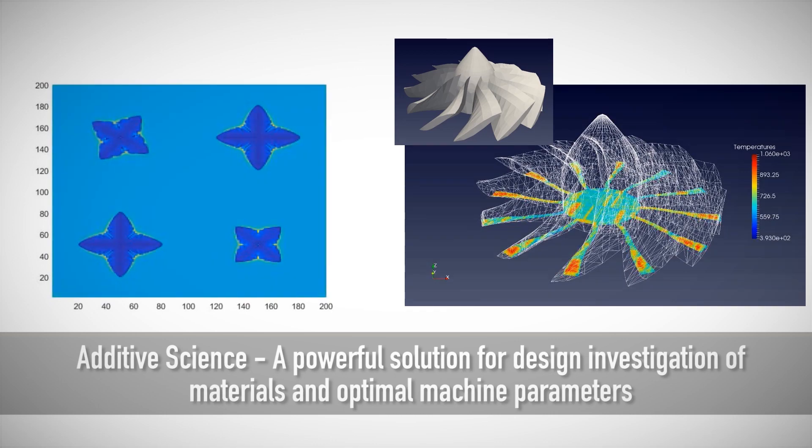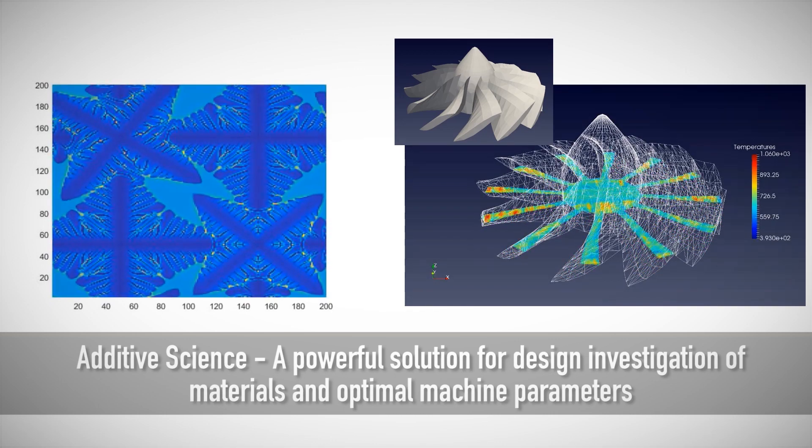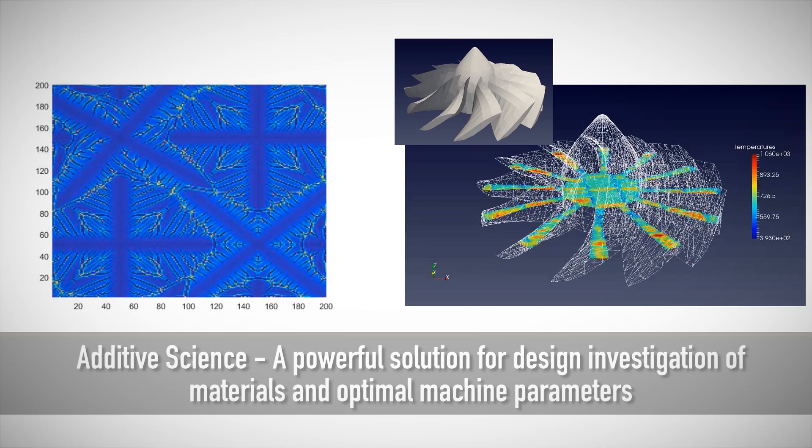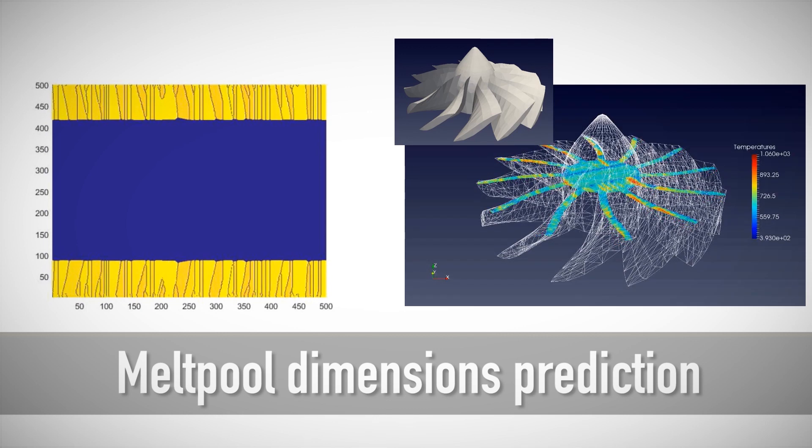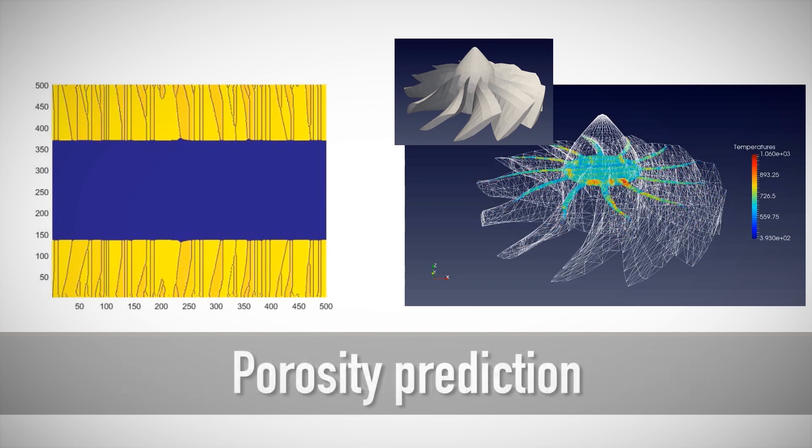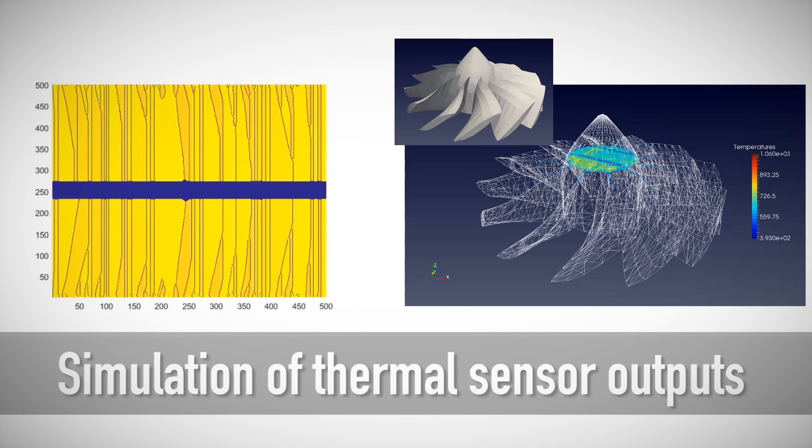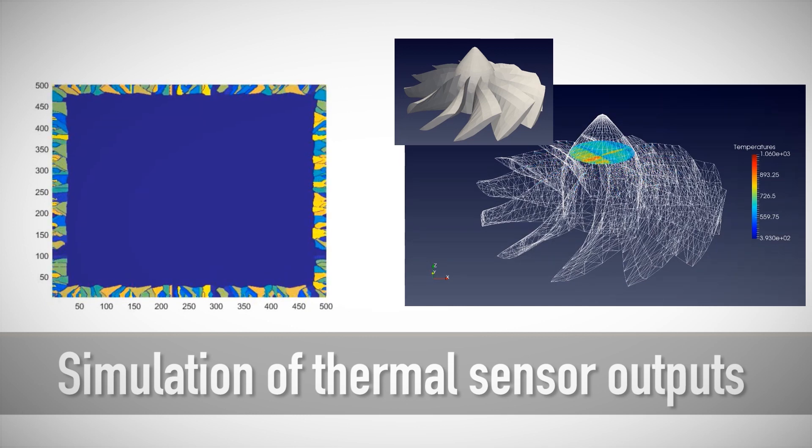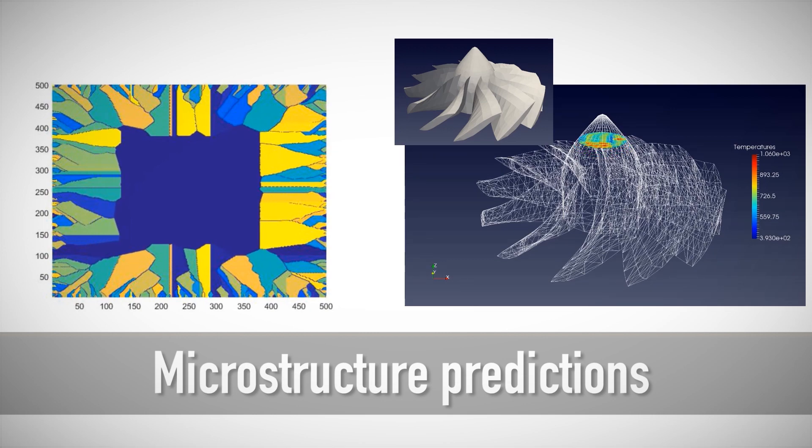And Additive Science, a powerful solution for design investigation of materials and optimal machine parameters. Additive Science provides users with melt pool dimensions prediction based on machine parameters and given material, porosity prediction, simulation of thermal sensor outputs that can later be used for building a digital twin, and microstructure predictions of the additively manufactured part.